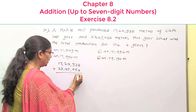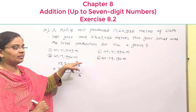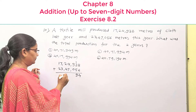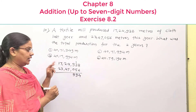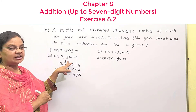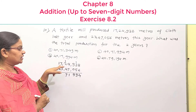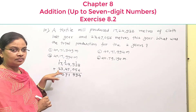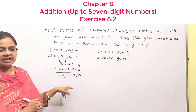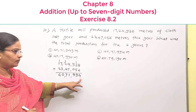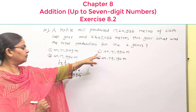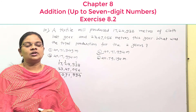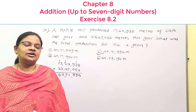8 plus 6 is 14 — carry 1; 4 and 1. 3 plus 1 is 4. 4 plus 5 is 9. 9 plus 0 is 9. 4 plus 7 is 11. 4 and 1. 2 plus 1 is 3. 3 plus 4 is 7. 7 plus 3 is 10. 1 plus 1 is 2. Answer option 4: 40,72,594. Option number 2 — correct answer. If you like this video, please like, share and subscribe to the channel.